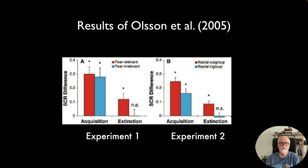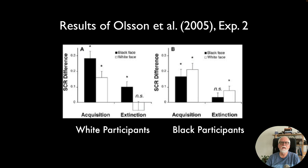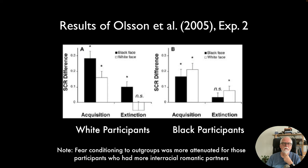The study showed the same effects with non-race-related stimuli in Experiment 1 and then with race in Experiment 2. Regardless of whether participants were white or black, it appeared to be an out-group phenomenon rather than a specific response to Black or white faces per se. They also found that fear conditioning to out-groups was attenuated for participants who had had more interracial romantic partners, suggesting that personal interracial experience may reduce these automatic fear conditioning effects.